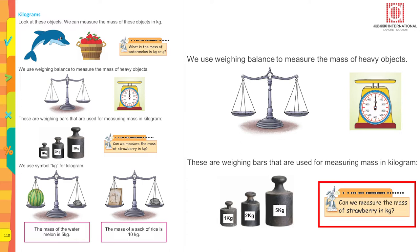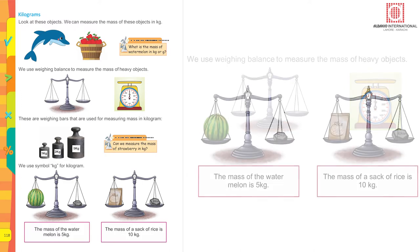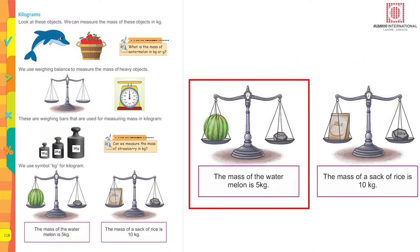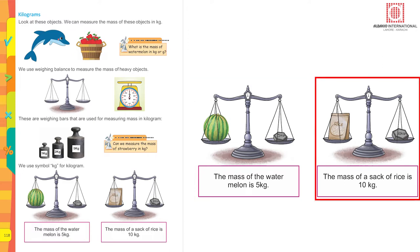Can we measure the mass of a strawberry in kg? No — it is a small object, so we measure the weight of a strawberry in grams. The mass of a watermelon — can we measure it in grams? No, it is a heavy object, so it is measured in kilograms. The mass of a sack of rice is 10 kg.